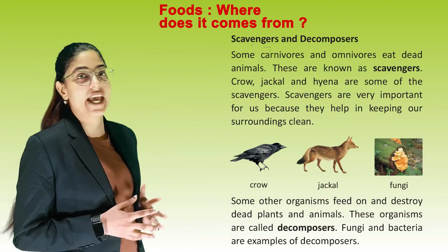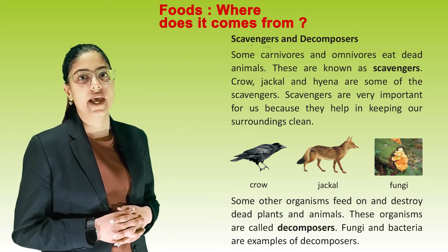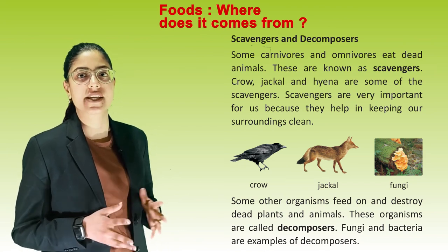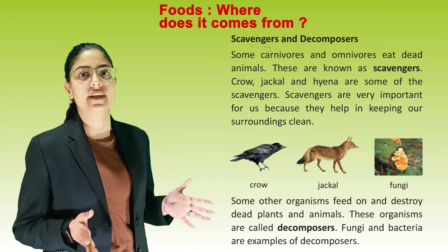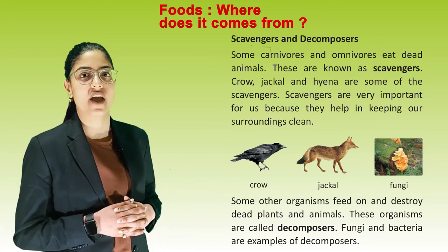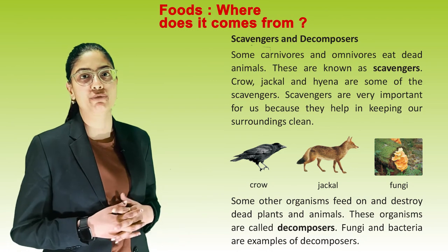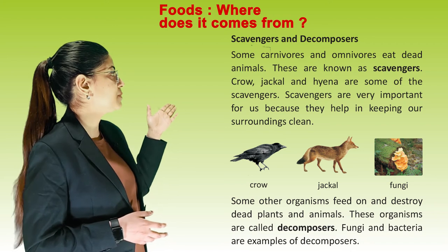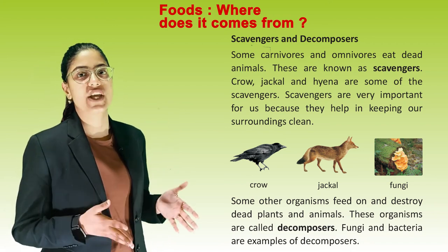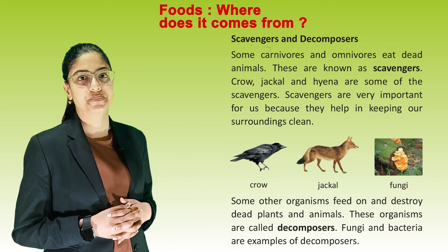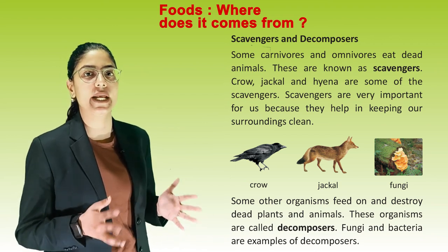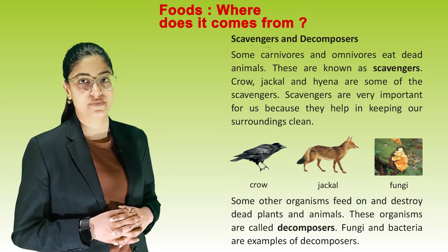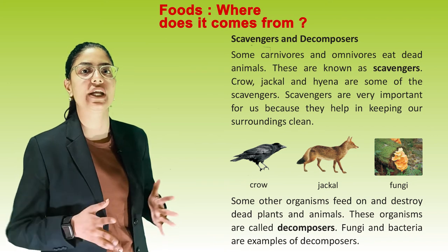Next are scavengers and decomposers. Some carnivorous and omnivorous eat dead animals — these are known as scavengers. Crow, jackal, and hyena are some of the scavengers. Scavengers are very important for us because they help in keeping our surroundings clean. Some other organisms feed on and break down dead plants and animals — these organisms are called decomposers. Fungi and bacteria are examples of decomposers.